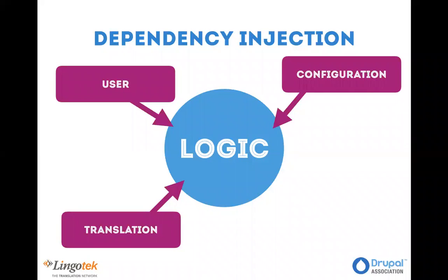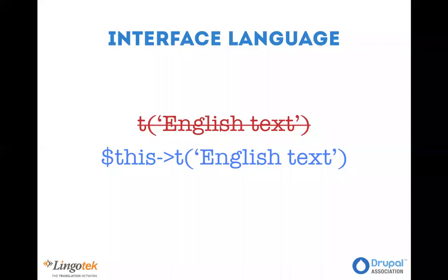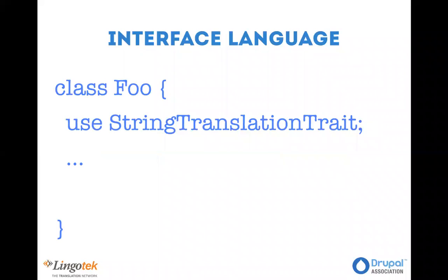So instead of calling the global t() function, what we call is $this->t() with the same arguments you used to use. We don't need to define the t() function in every class we create — we can use the string translation trait, which includes the string translation service in our class along with the t() function. Most base classes like FormBase and other interface classes already use the string translation trait, so if you extend from them, you'll already have this available.